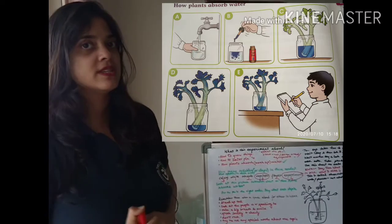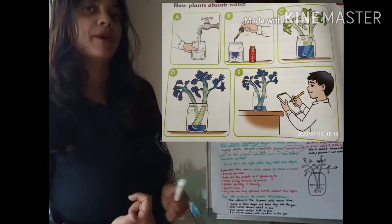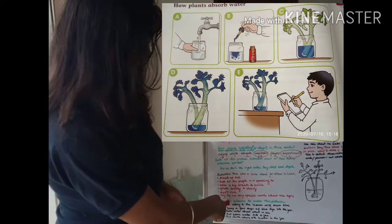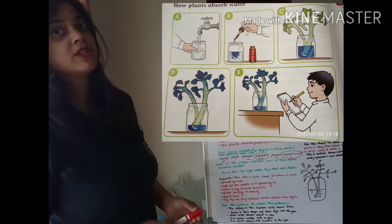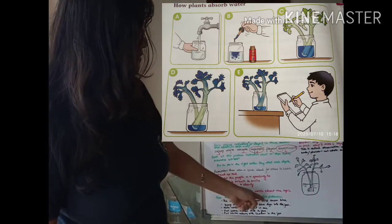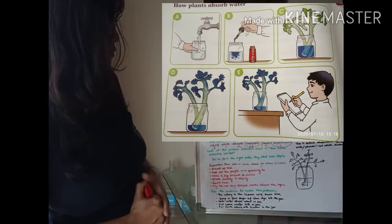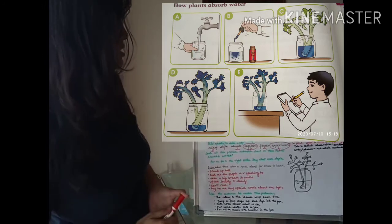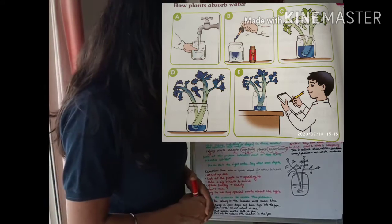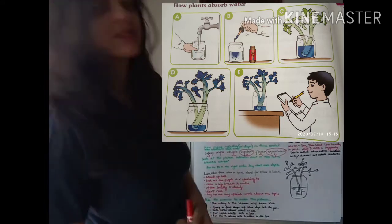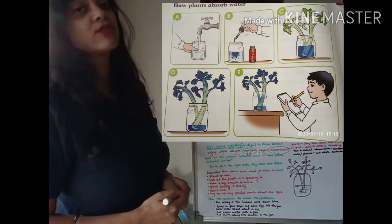Now, see the pictures and correct the order in which the experiment is going about. Use the sentences to match the pictures: the celery and the leaves will turn blue; drop a few drops of blue dye into the jar; make notes about what you see; put some water into a jar; put white celery with leaves in the jar.